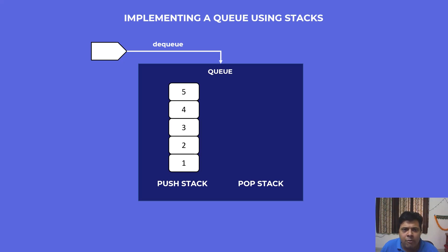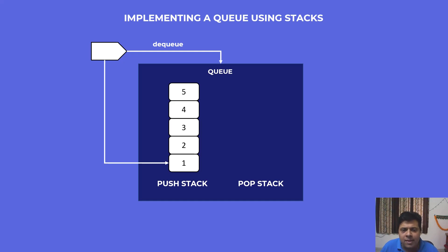Now imagine the consumer decides they want to dequeue from our queue. What they expect is the first element they inserted — which is element 1. However, we have no way of accessing this element directly. We can only access it after popping all the elements above it: elements 5, 4, 3, and 2. But if we pop those elements we are going to lose them, and subsequent dequeue requests will be in trouble. So how do we solve this situation?